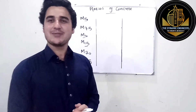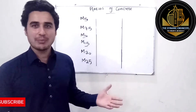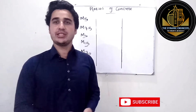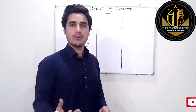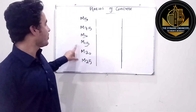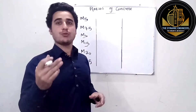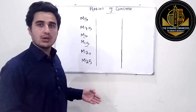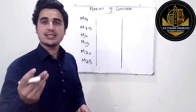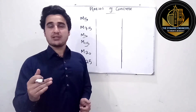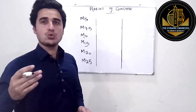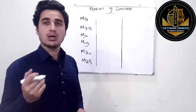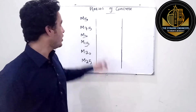Assalamu Alaikum, welcome back to Dynamic Engineers. Today we are going to talk about the ratios of concrete — the ratios for different grades of concrete that we normally use in construction. Here I have listed six different values and I'm going to write the ratios for these. Although there are values like M30, M35, M45, I am not going to list ratios for those because in normal construction practices, M30, M35 and above are specially designed concretes, so we cannot give them a specific fixed ratio.